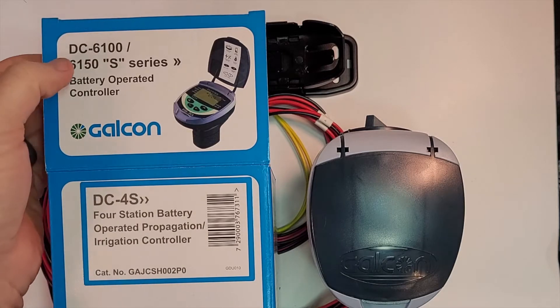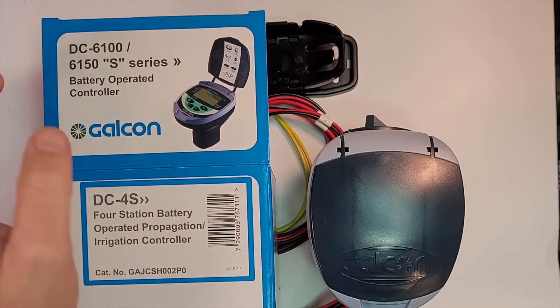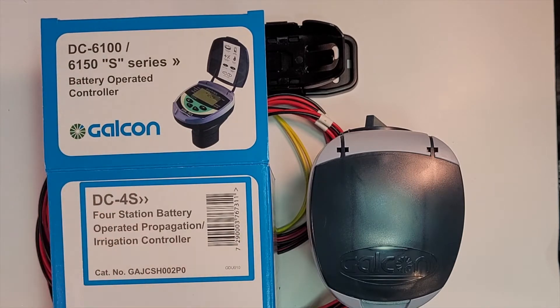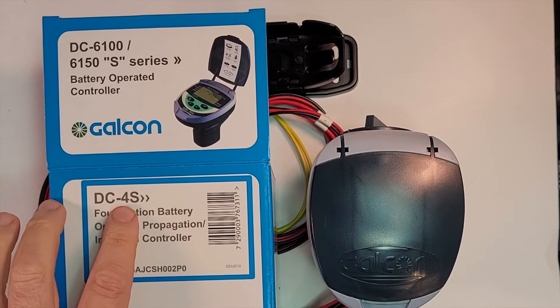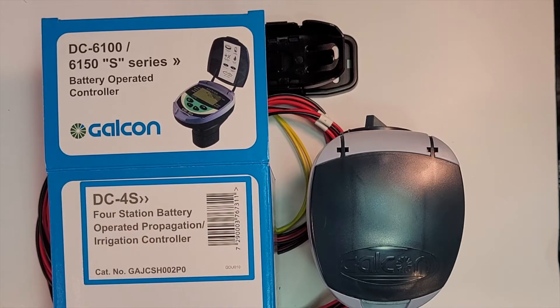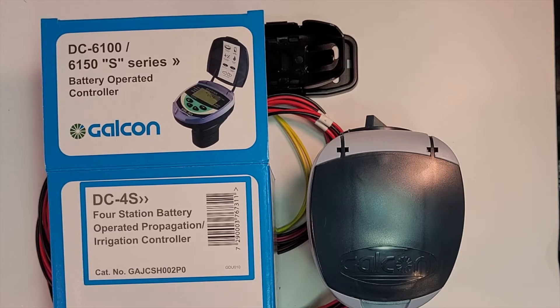Today we're going to talk about the DC6100 series. This is the S series battery operated, so you don't need to plug it in or any grid or anything like that. This is the DC4S, so it can control up to four valves with a master valve as well.